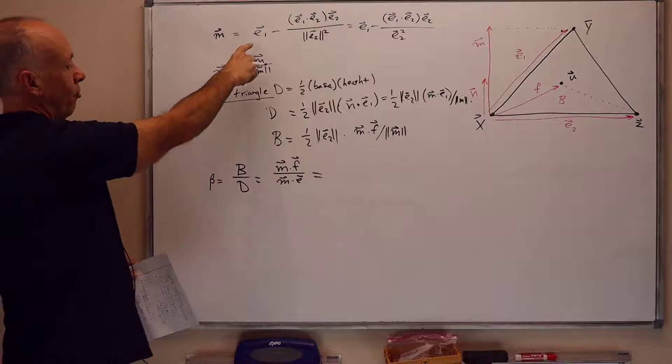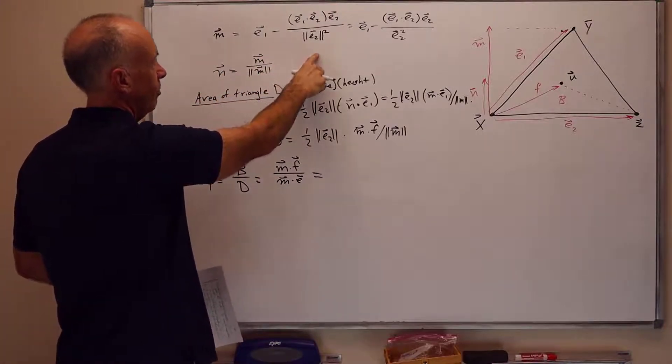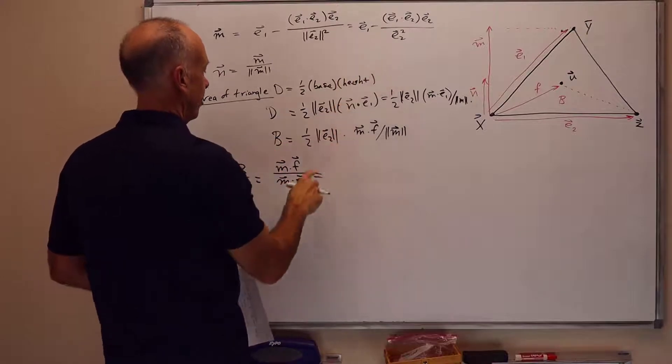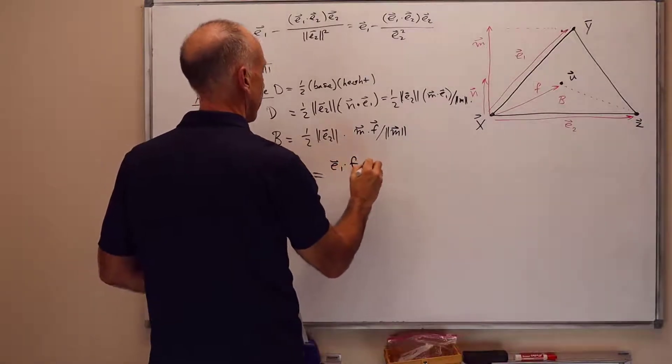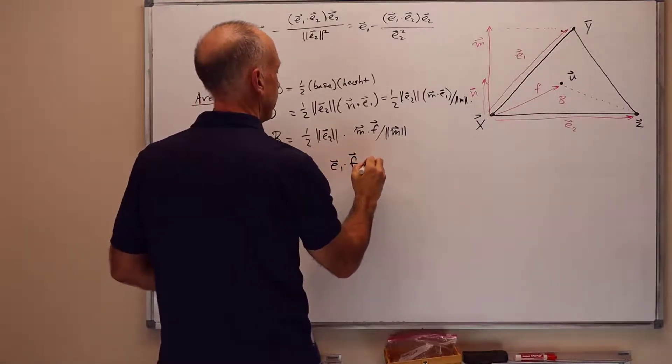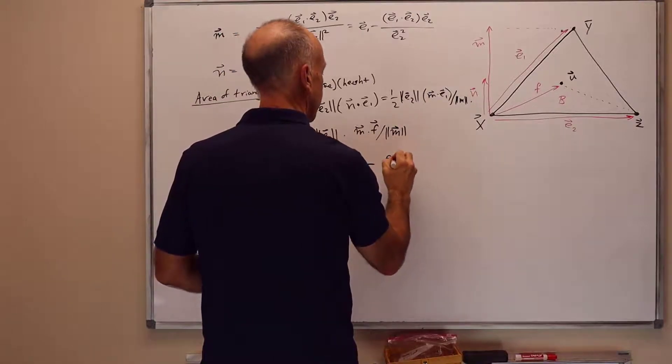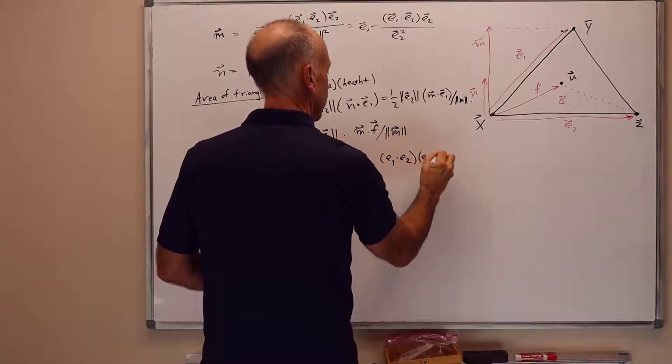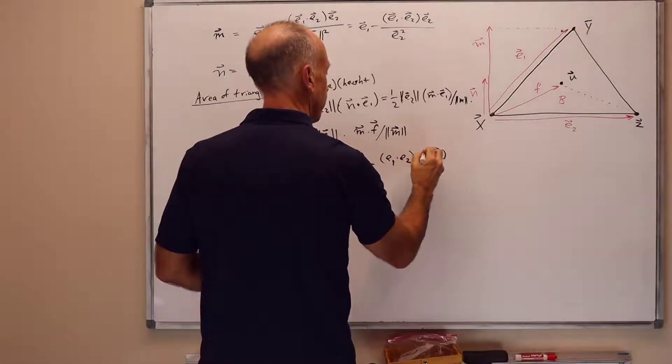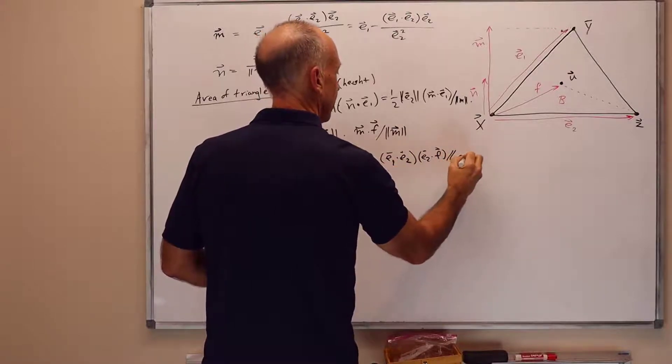And we're left with this. Now we go for this formula with m, and so let's also, while we're doing this, we'll also clear the denominators here. So m dot f, well let's leave it there, it's e1 dot f minus e1 dot e2 times e2 dot f divided by e2 squared.